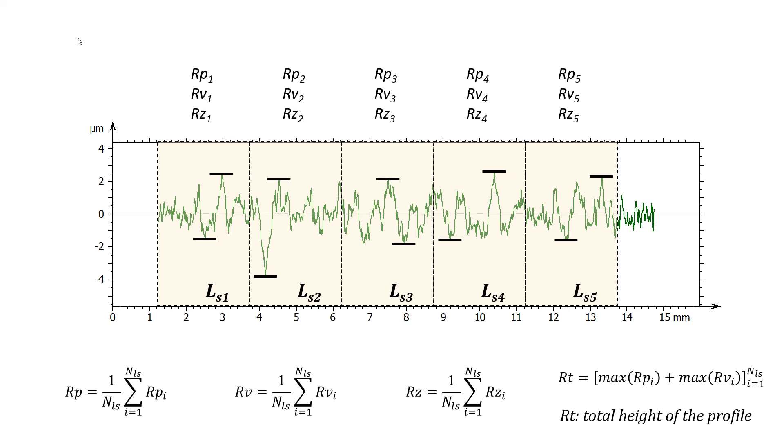Another parameter, RT, or the total height of the profile, can be defined. It is calculated as the sum of the highest RP estimator and the highest RV estimator. RZ is therefore smaller than or equal to RT. On the primary profile, PT equals PZ as there is no sampling length and only one value of each parameter is calculated.